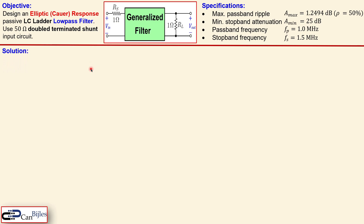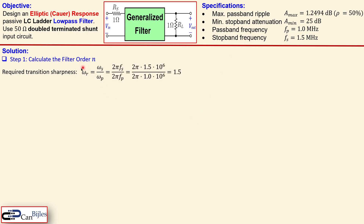For step one, we determine the filter order N. First we look at the transition sharpness required, which is determined by the ratio of the stopband frequency to the passband frequency — given by omega_r. We have the stopband frequency over the passband frequency, and it doesn't matter whether you use radians per second or hertz. In this case the ratio is simply 1.5.